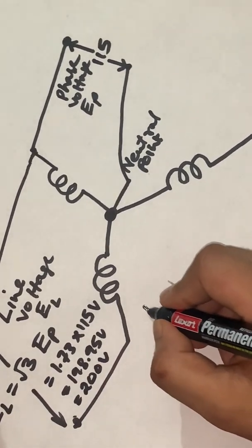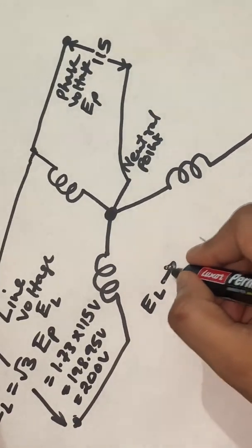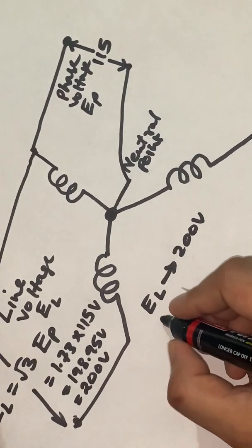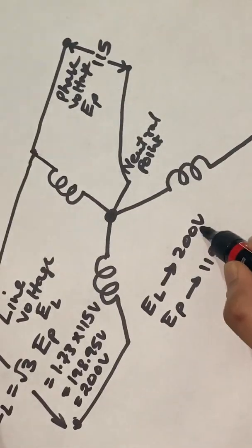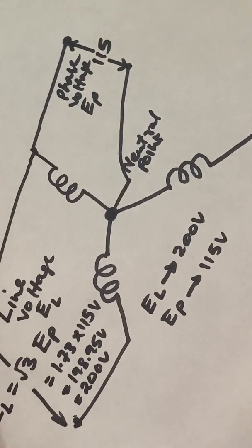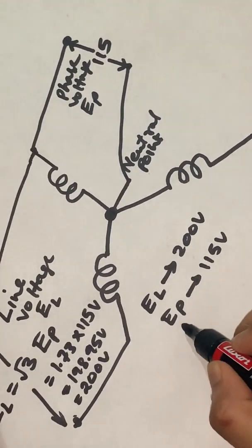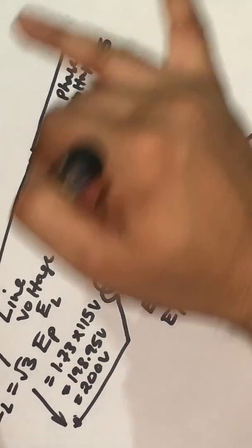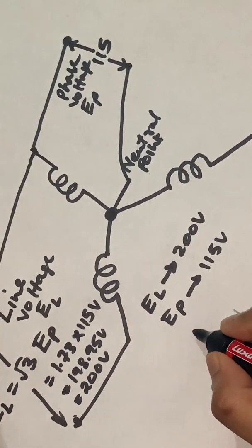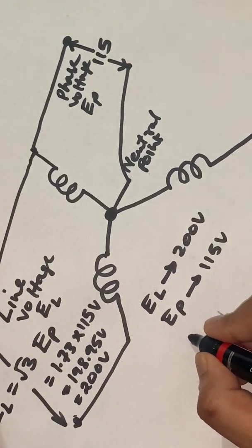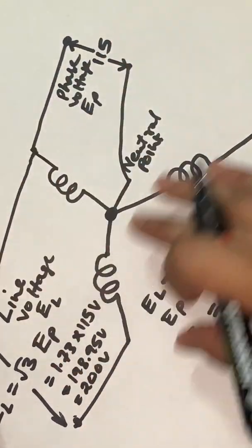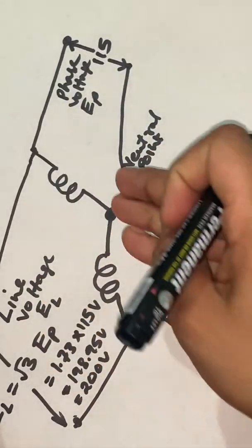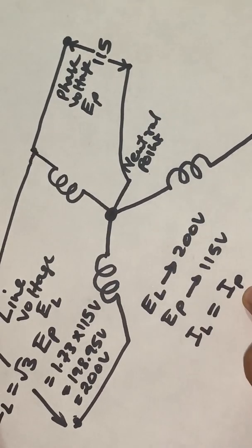Hence, EL is 200 volt. So line voltage is 200 volt and phase voltage is 115 volt. Note that line voltage is always greater than phase voltage. The other point in the star connection is about the current. Line current, designated as IL, is always equal to phase current, designated as IP. So in a three-phase circuit with star connection, the line current is equal to the phase current.